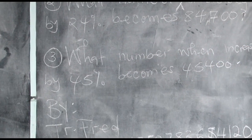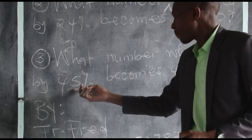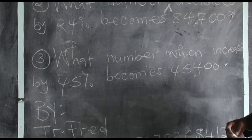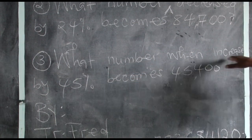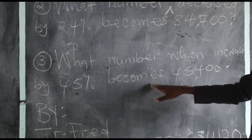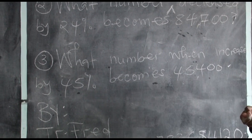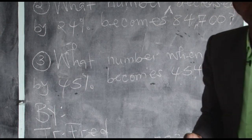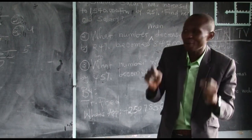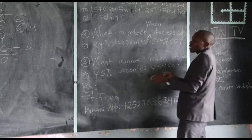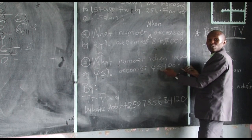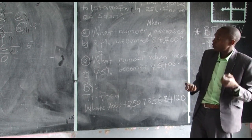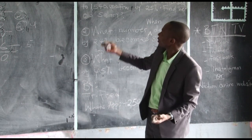The last activity: what number when increased by 45% becomes 45,400? They are asking which number, when increased by 45%, gives 45,400. They have not given you the original number — they want you to find it. Copy the activities, work them out, and when schools open, present your work to your mathematics teacher.